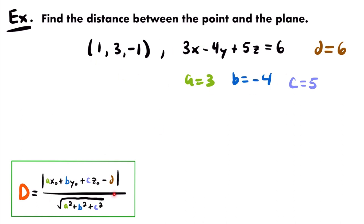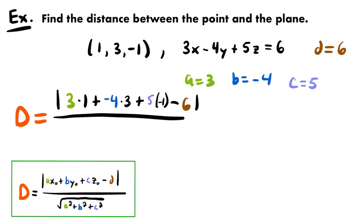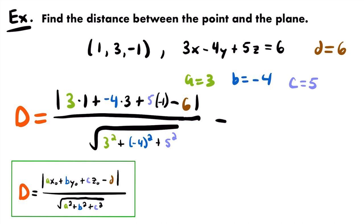Now we have everything to set up the formula. The distance equals the absolute value of a·x₀ + b·y₀ + c·z₀ - d: that's 3×1 + (-4)×3 + 5×(-1) - 6. In the denominator, we have √(a² + b² + c²) = √(3² + (-4)² + 5²).